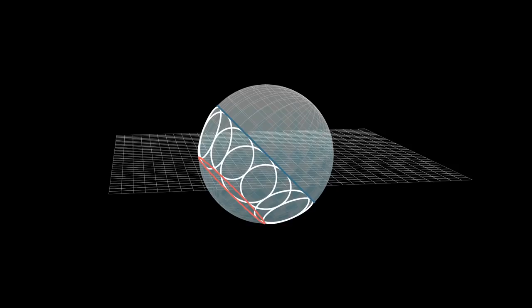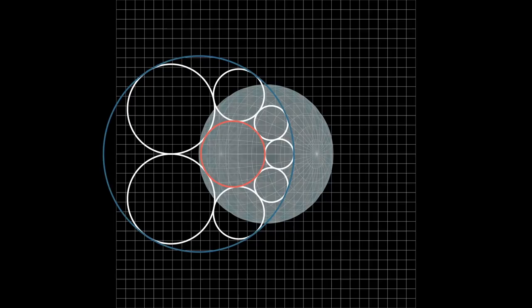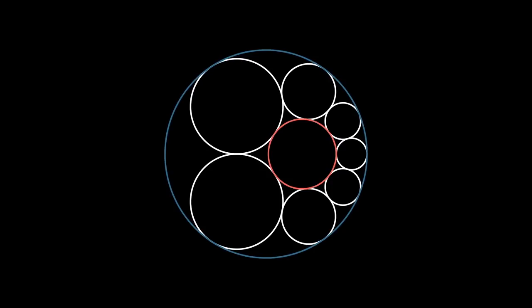Step three, roll the sphere a little bit. Step four, use a stereographic projection from the new north pole of the sphere to map everything back onto the plane. And step five, scale and translate the resulting image so the outer circle is back in the same place it was in before.